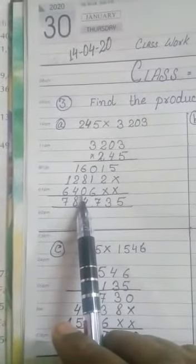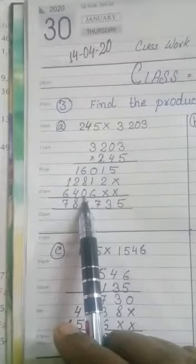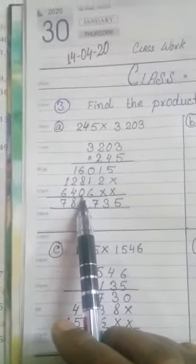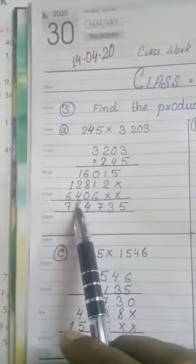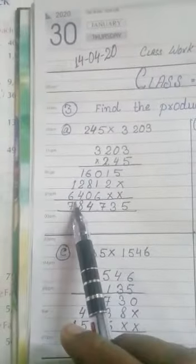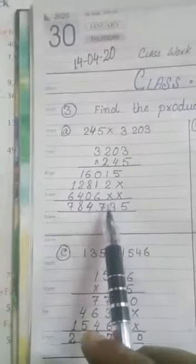2 × 3 = 6. Then 2 × 0 = 0. You know if zero multiply by anything, it will be zero. 2 × 2 = 4 and 2 × 3 = 6. Now we'll add.